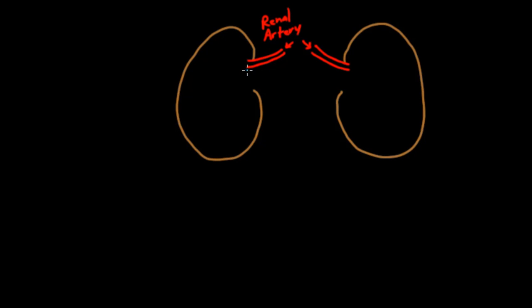And we've got renal veins with blood flowing back out of them. So once the blood is headed back to the heart, we call it a renal vein. And there are two of them.